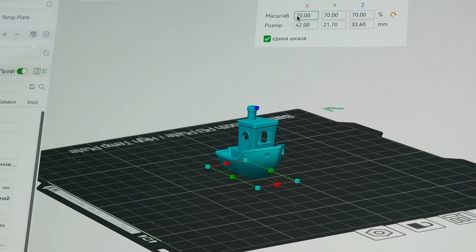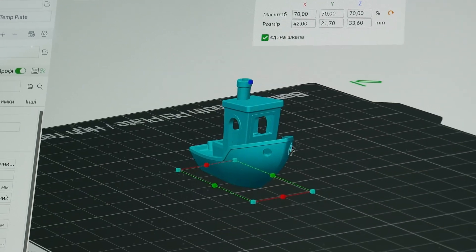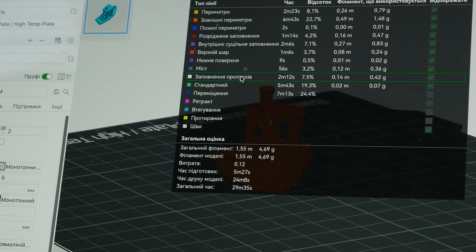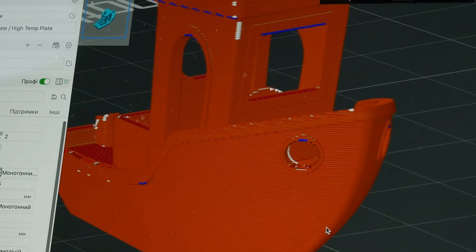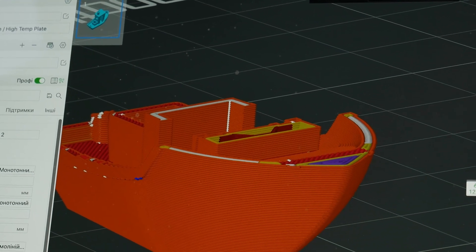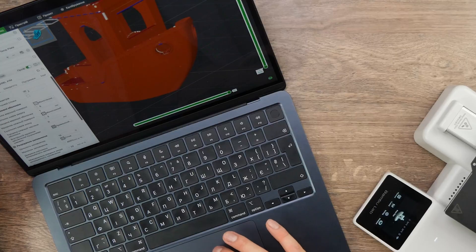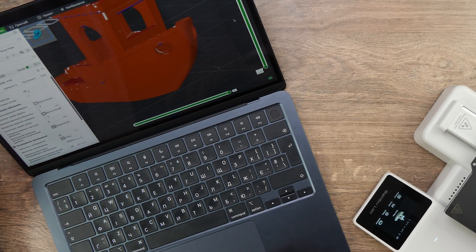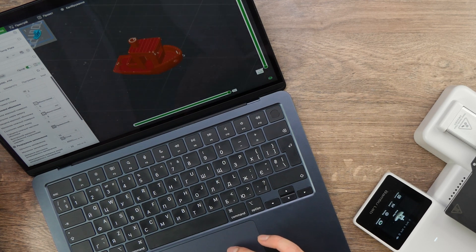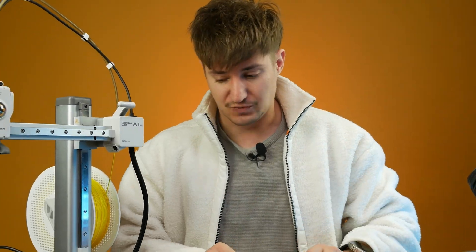We choose a model. Scale. And I think 75. Even 70 of the total size. It is already much smaller. Look, if we slide this model, you can see each layer separately. And this is how it will be printed. The height of one layer is 0.2 mm.